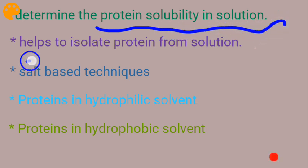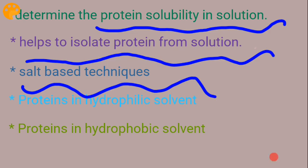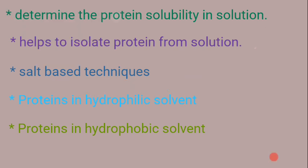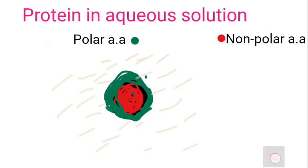Salting in and salting out basically determine the solubility of protein present in solution. Salting out helps to isolate the protein present in your solution. Both techniques are based on the concentration of salt present in the solution.